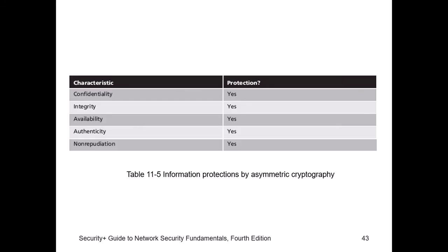Asymmetric cryptography can protect all five: confidentiality, integrity, availability, authenticity, and non-repudiation.